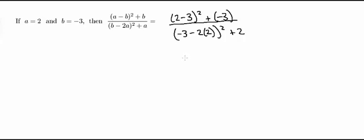And actually looking at it now, I realize that I actually made a mistake right here. So let me go ahead and rewrite that. So this should be 2 minus negative 3 quantity squared plus negative 3. I'm just going to cross this out.